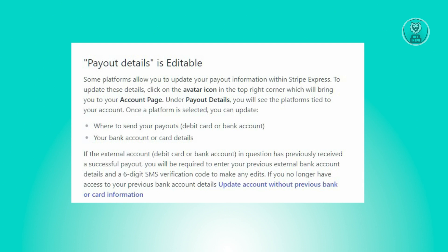If the external account — debit card or bank account in question — has previously received a successful payout, you will be required to enter your previous external bank account details and a six-digit SMS verification code to make any edits. If you no longer have access to your previous bank account details, update account without previous account or card information. And that's about it.